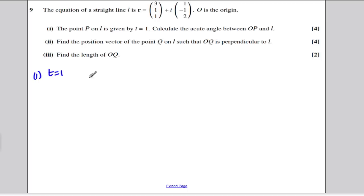When T is 1, then we would have R is (3, 1, 1) plus 1 lot of (1, -1, 2), putting in T to be 1 and working this out, it would be (4, 0, 3). So the position vector of P is 4i + 0j + 3k.